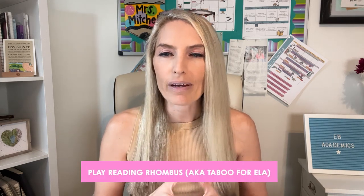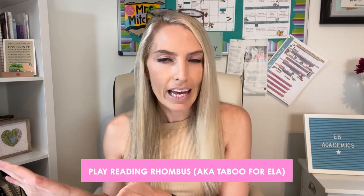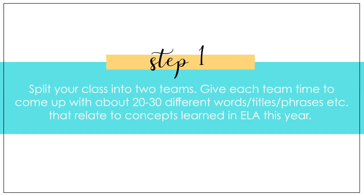To play Reading Rhombus, aka Taboo for ELA, you'll want to split your class into two different teams. Give each team time to come up with about 20 to 30 different words, titles, phrases, et cetera, that relate to concepts you learned in ELA this year. For example, a team might come up with verbals because that was a grammar concept they learned.